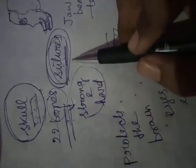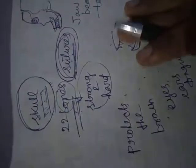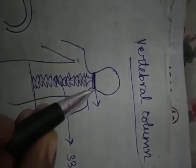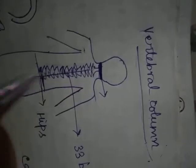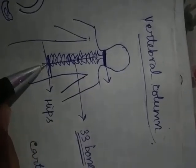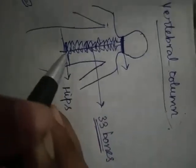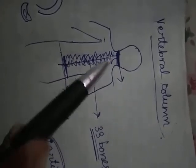These bones are joined with each other through sutures. The second part of the human skeleton system is the vertebral column. The vertebral column is located at our back portion, from the neck region — from the base of the skull — and it extends up to our hip region. This elongated structure is made up of 33 bones, and these bones are connected with each other through cartilages.